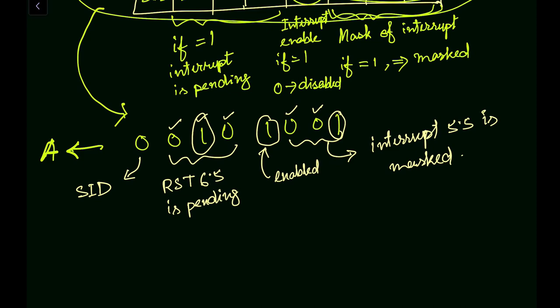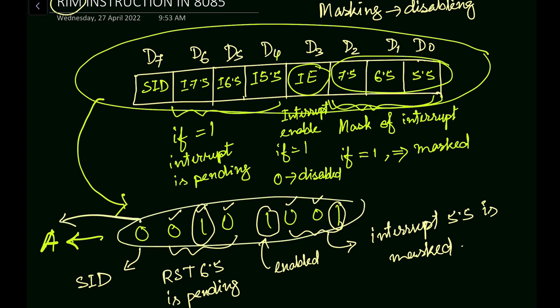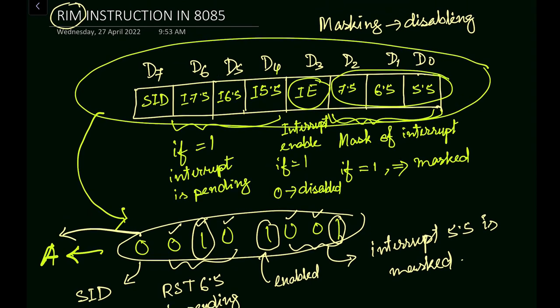So in this way, you have to understand that in the case of the RIM instruction, it is used to read the status of the interrupts — that is RST 7.5, RST 6.5, RST 5.5 — and the serial data input bit. This instruction loads the pending interrupts, the interrupt masks, the restart interrupt masks, and the contents of the serial input data into the accumulator. In our upcoming video, we will see about the SIM instruction — the Set Interrupt Mask instruction.